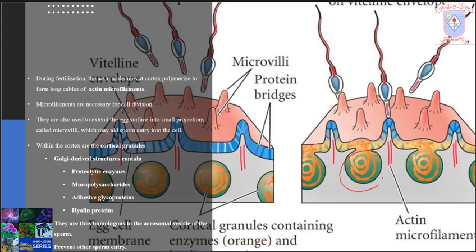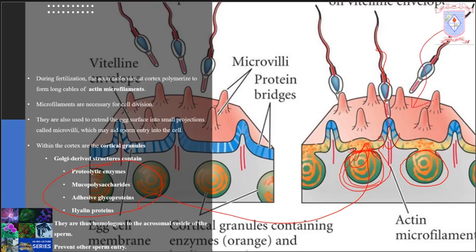The cortical granules are located very near to the plasma membrane, in the cortex region of the cytoplasm. Once a single sperm enters the egg, these cortical granules fuse with the plasma membrane and release their components — proteolytic enzymes, mucopolysaccharides, adhesive glycoproteins, and hyaline proteins — into the perivitelline space, preventing the entry of other sperm into the egg. This prevents the polyspermy condition.